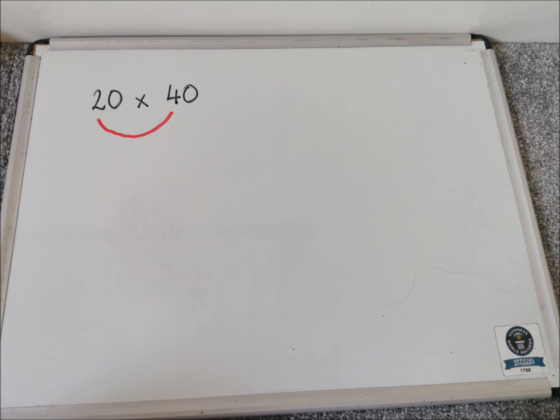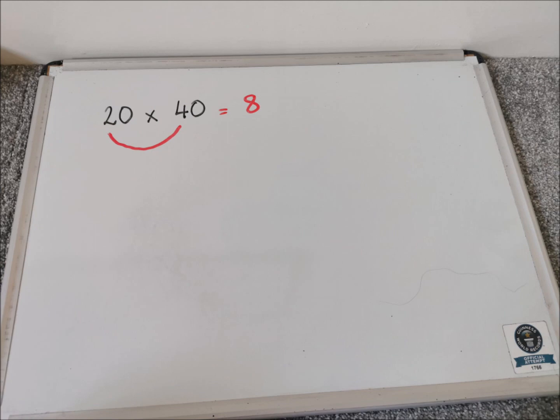So let's imagine I have got 20 times 40. I do exactly the same. I draw a smile underneath the 2 and the 4. And I do 2 times 4. And I can write that as part of my answer, which is 8.